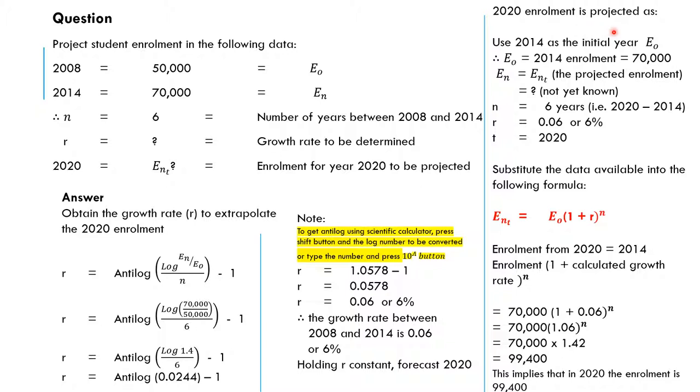Right here, 2020 enrollment is projected as: use 2014 as initial year. So this will now be our initial year, 2014. And remember, the E0, which is 2014 enrollment, is 70,000. And the ENT, the year that we want to project, is not yet known. Then n is 6 years, between 2020 and 2014.